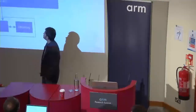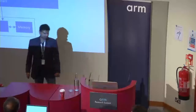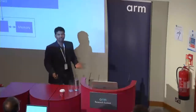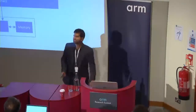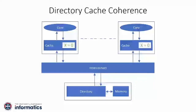Very brief review about cache coherence. Whenever in a shared memory multiprocessor with local caches, there is always a risk of cached values becoming stale. We see two blocks with address x with an initial value 0, and the moment one of the processors writes to it, the other value becomes stale. A cache coherence protocol prevents this situation by updating or invalidating other shared copies on a write.